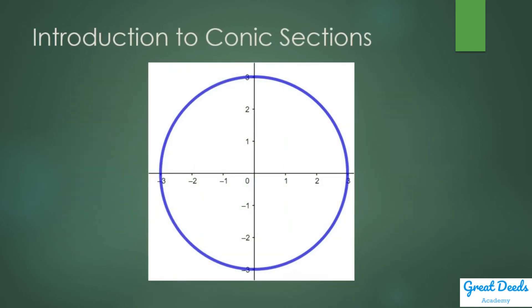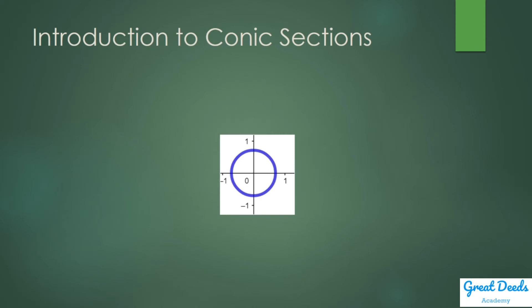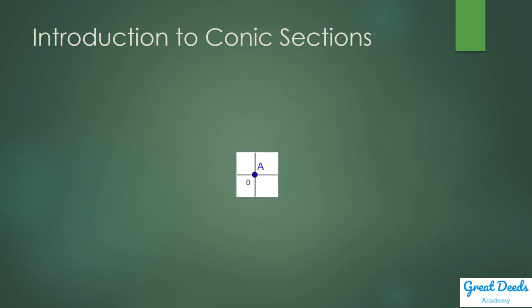For the circle, its size is defined by the radius. A shorter radius gives a smaller circle. When the radius becomes so small it is almost nothing, what you get looks very much like a point. So a point is a degenerate case of a circle.